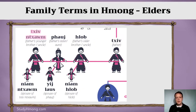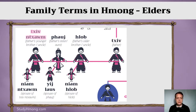We're going to start with your father's side. Whether you're male or female, you'll use the same set of terms. We know that the father is called Zi. As for the father's relatives — specifically his brothers and sisters — the youngest brother of your father, which would be your uncle, you would call Zi Nza. And his wife you would call Ni Nza.